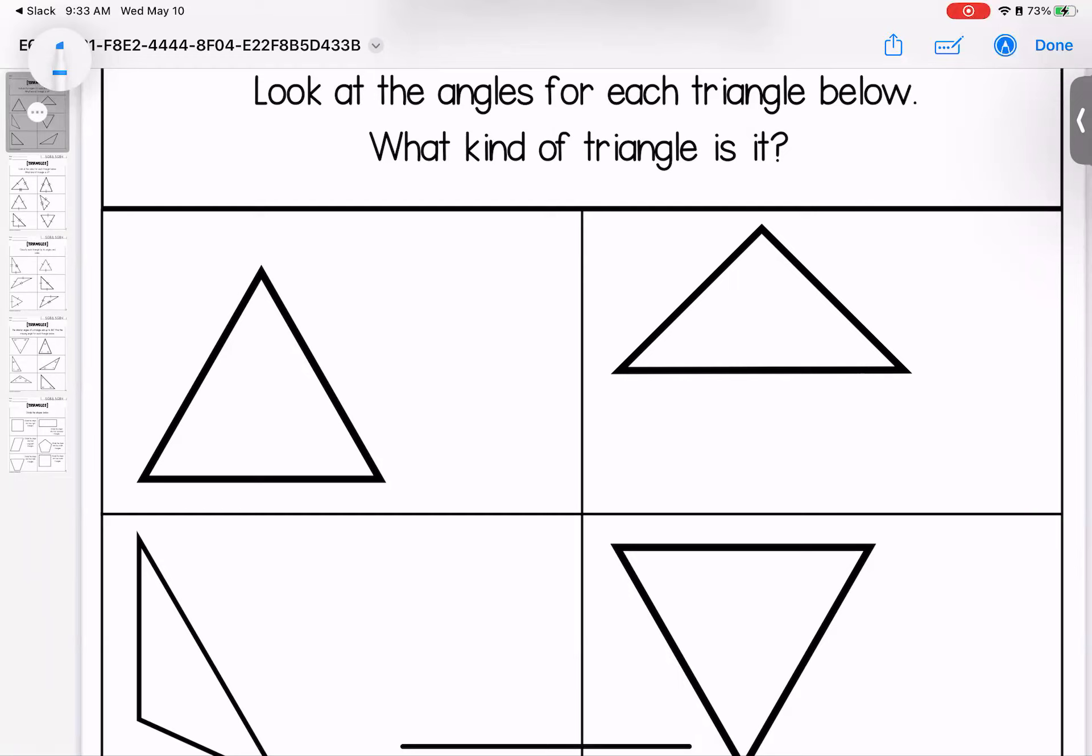Looking at our triangles, starting off with naming them by angles. These three acute angles make it an acute triangle.